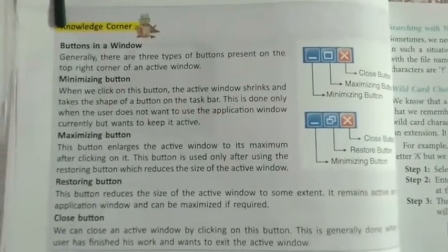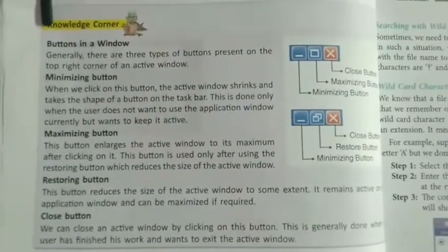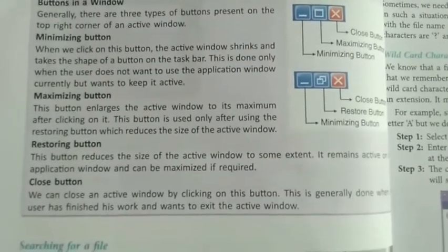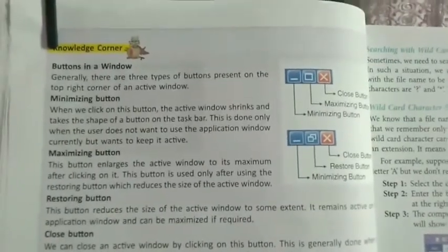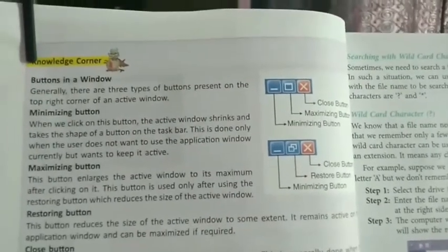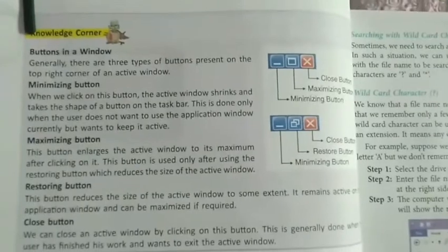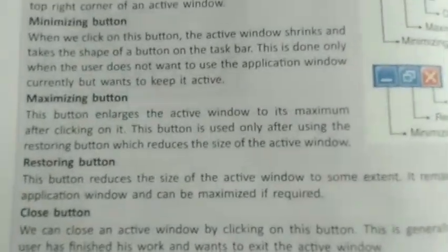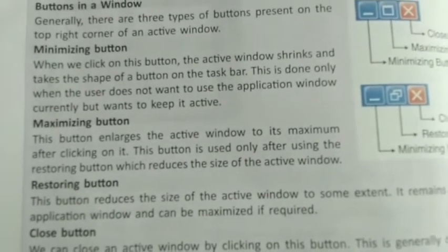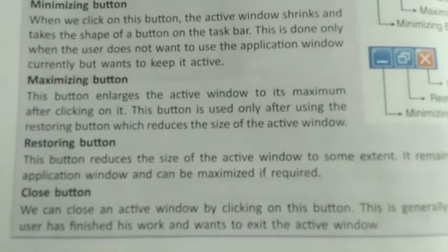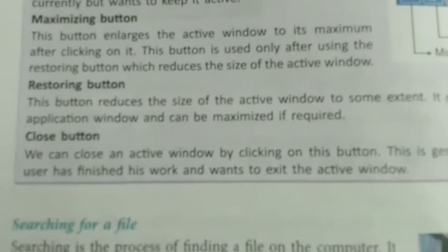The next topic is the function of different buttons present in any window: the minimize button, maximize button, restore button, and the close button. If you click the minimize button, the application will minimize down to the taskbar. Maximizing increases the size of the window. If you click the restore button after maximizing, the size of the window will decrease again. Finally, the close button closes the application.